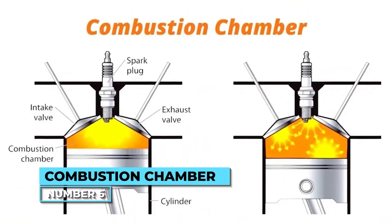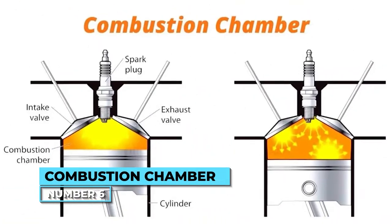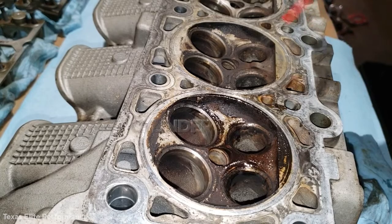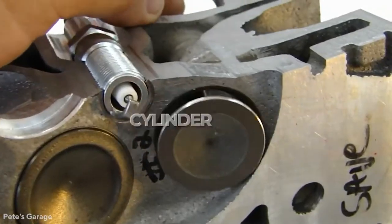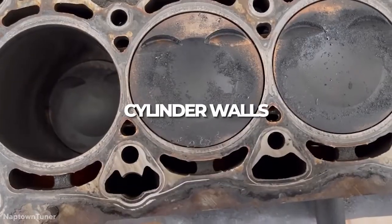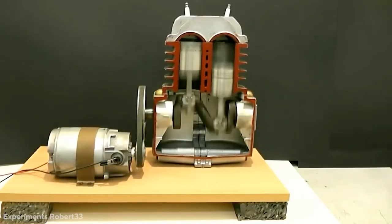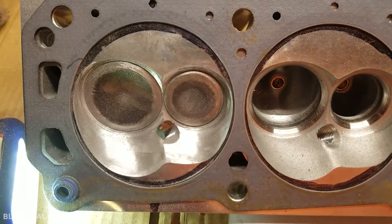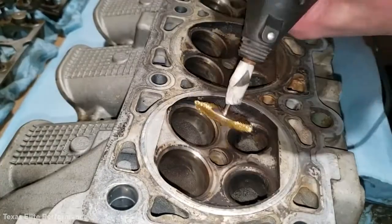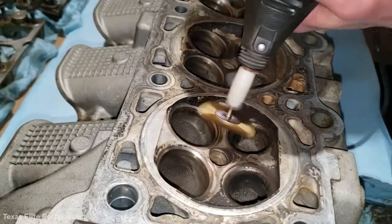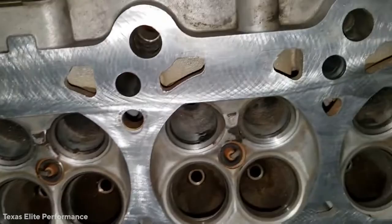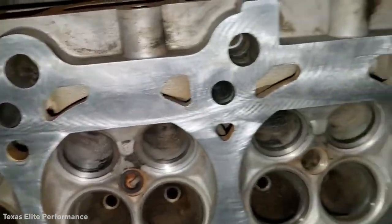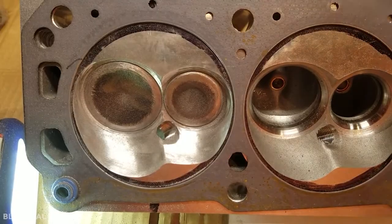Number 6: Combustion Chamber. The combustion chamber is surrounded by a cylinder head, cylinder walls, and a piston head, where fuel combustion occurs. Aluminum is used in the combustion chamber because it dissipates heat more efficiently than cast iron. Four round holes in the combustion chamber are used to house valves.